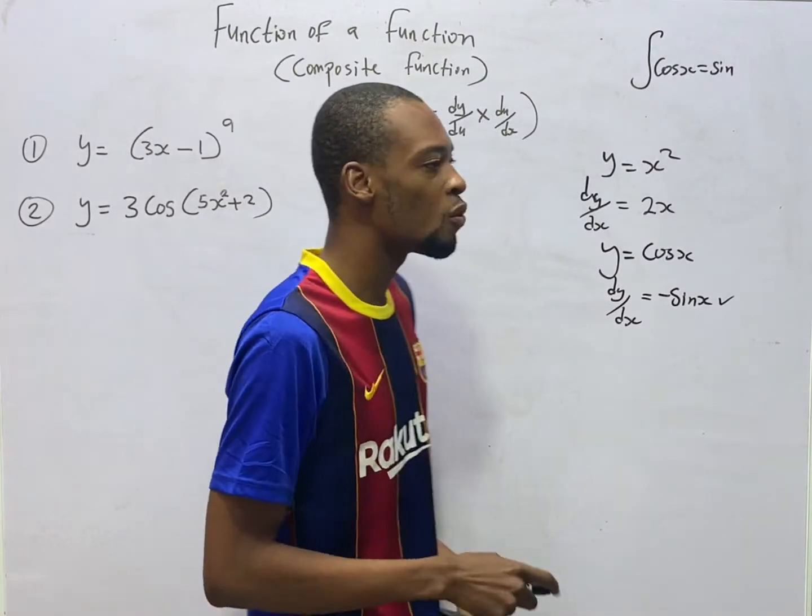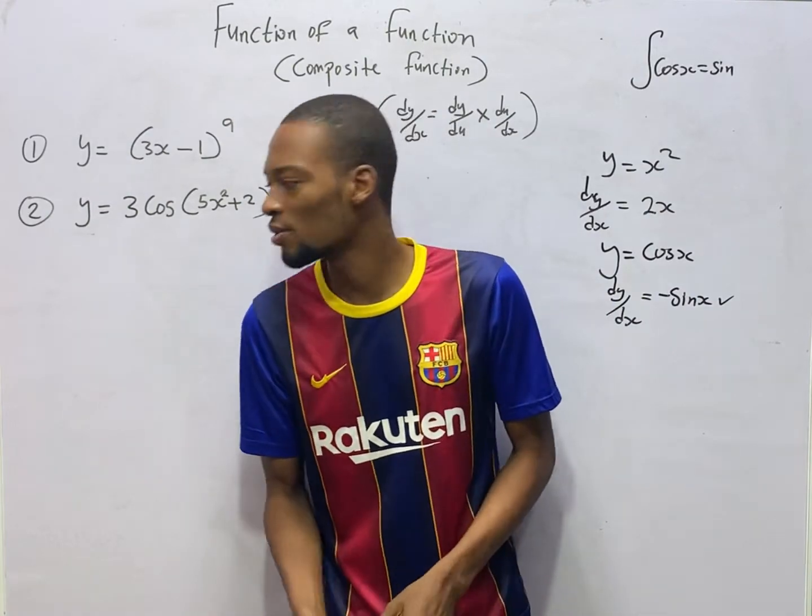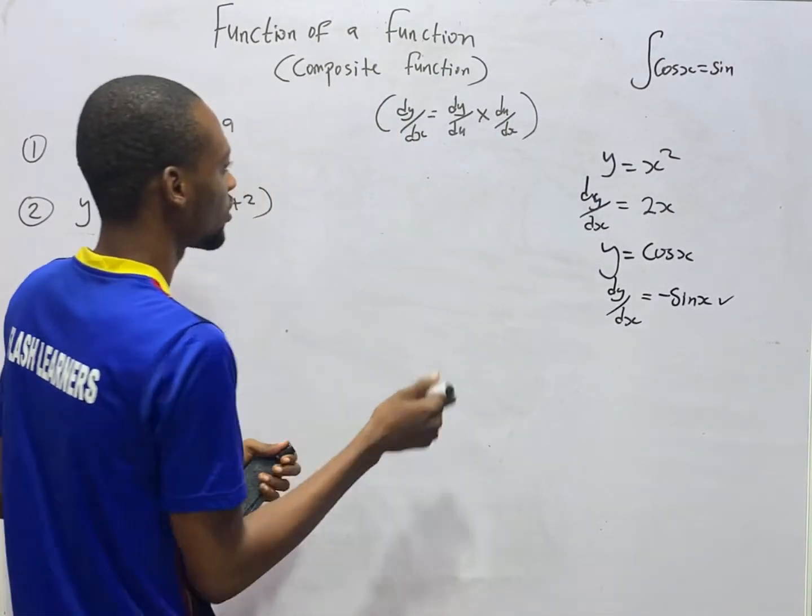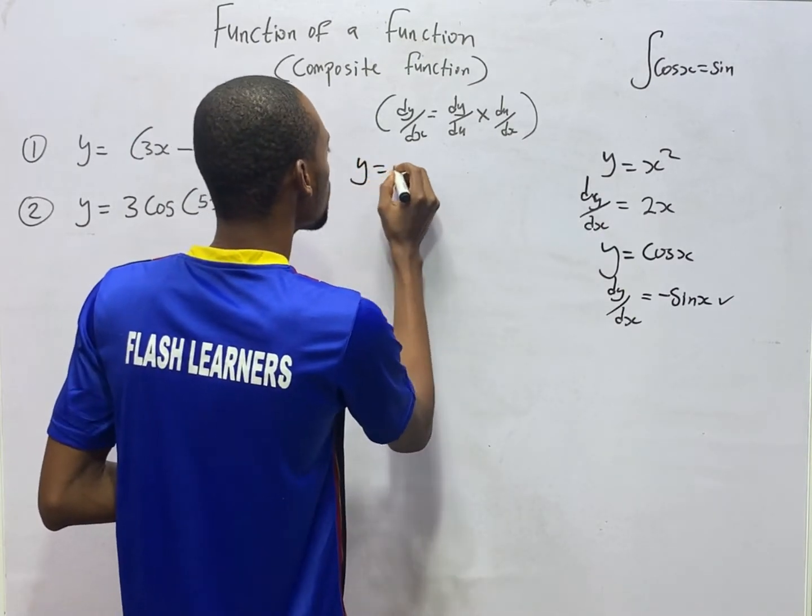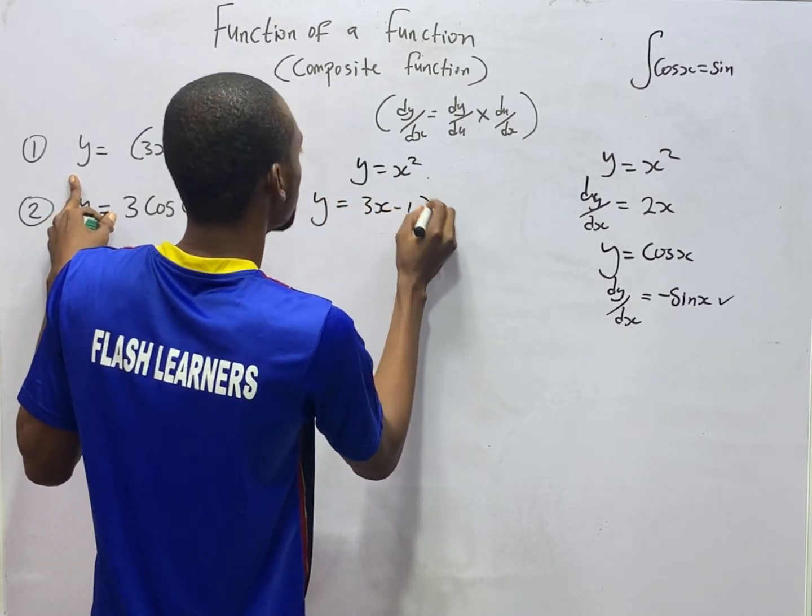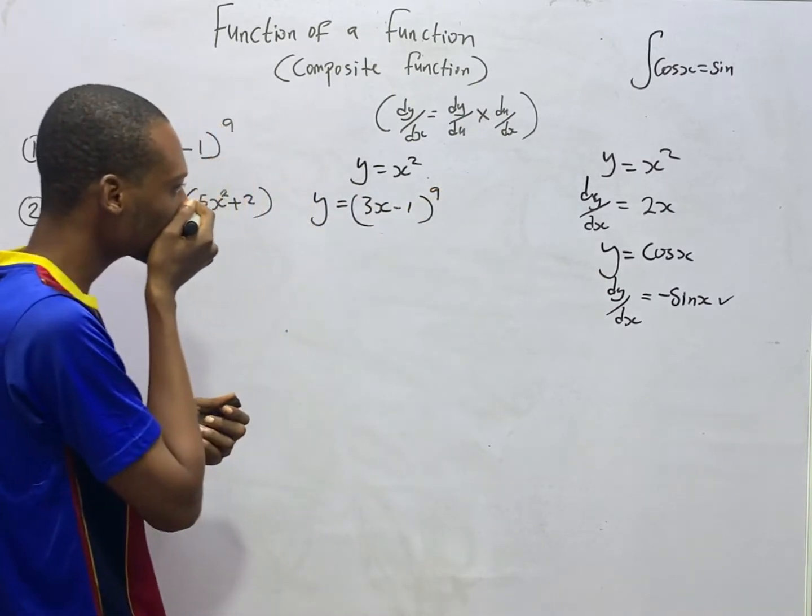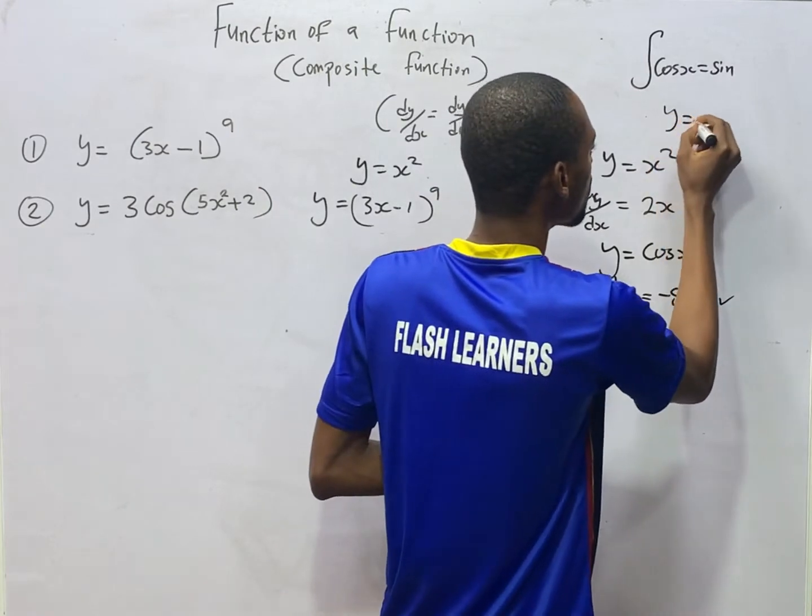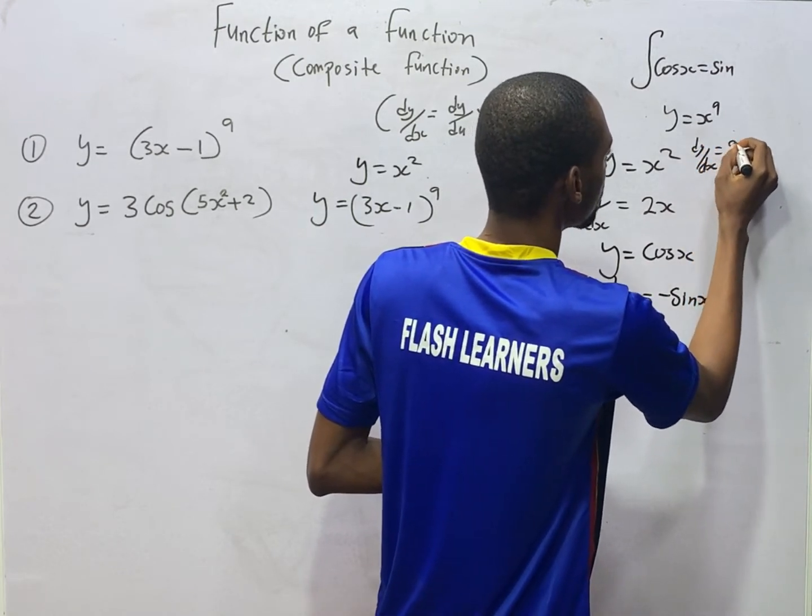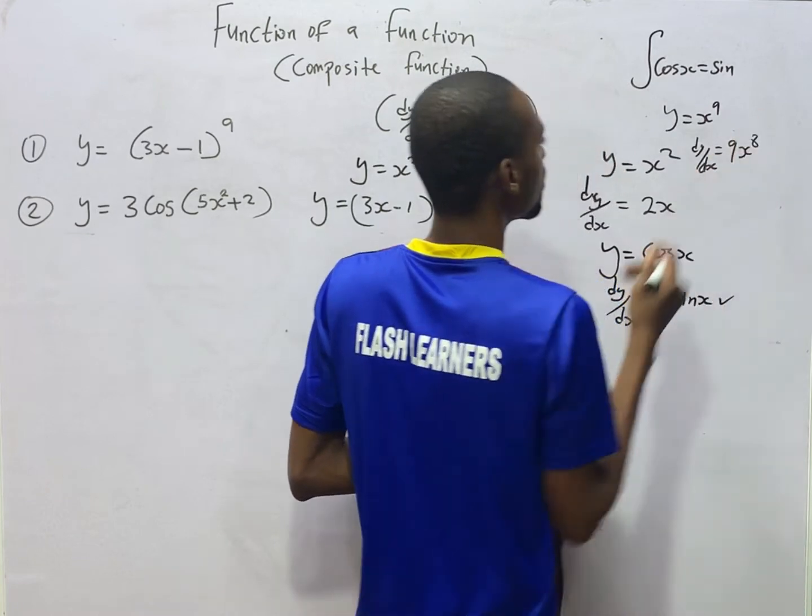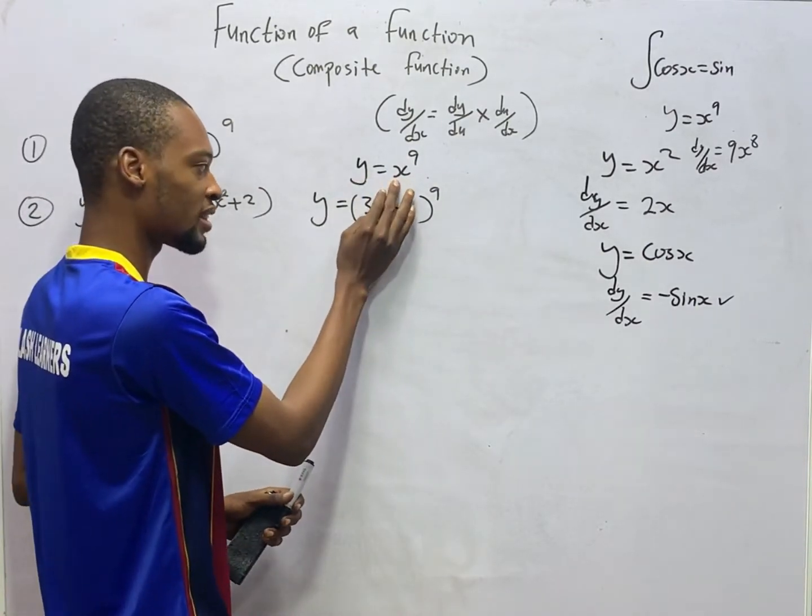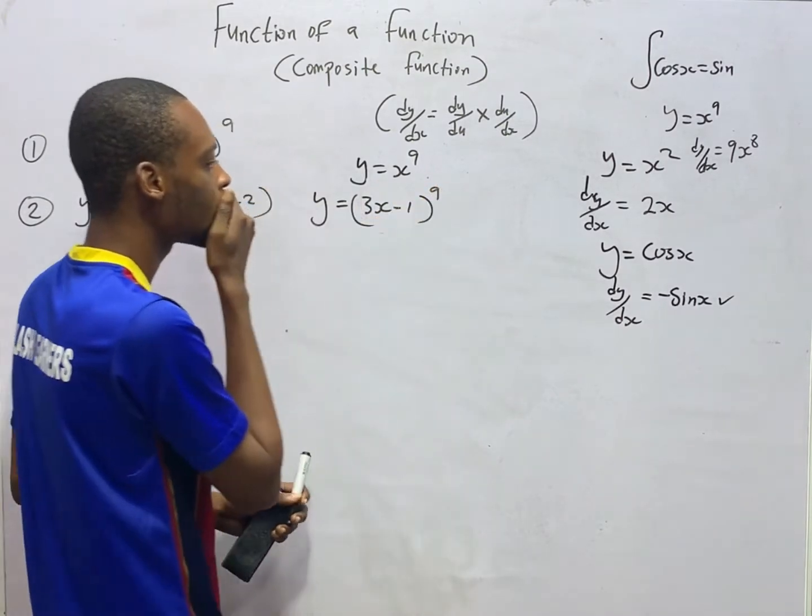But there is a case where a function has another function. In that case, we say that it is a composite function or function of a function. Now compare this. Look at this. Y equals x squared. Compare it to this: y equals (3x-1) raised to the power of 9.